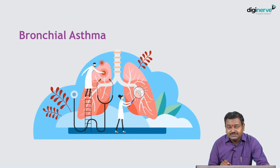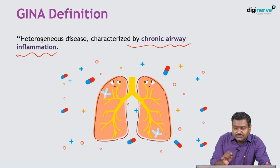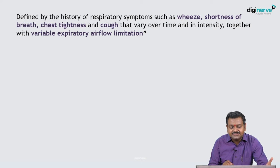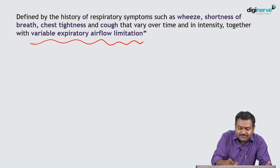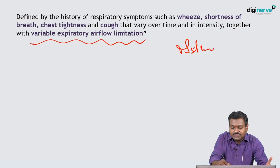Coming to the definition of bronchial asthma: the GINA 2020 guidelines define asthma as a heterogeneous disorder characterized by chronic airway inflammation. Very importantly, the first line of the definition says it is an inflammatory disease — not caused by mechanisms other than inflammation of the airways. The bronchi, bronchioles, large airways, and smaller airways are getting inflamed. It is defined by a history of respiratory symptoms of wheeze, shortness of breath, chest tightness, and cough that vary in intensity and time, together with variable expiratory airflow limitation.